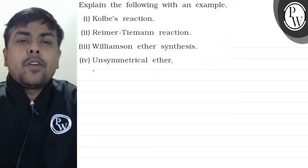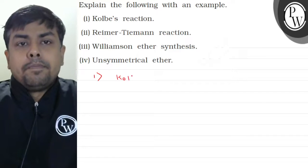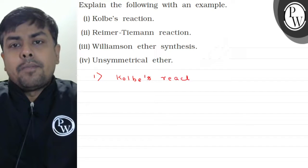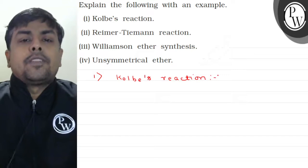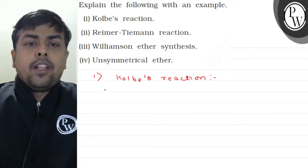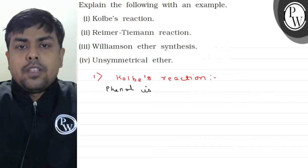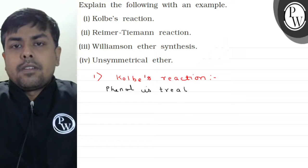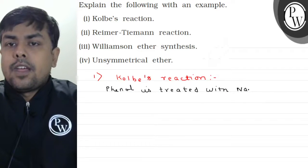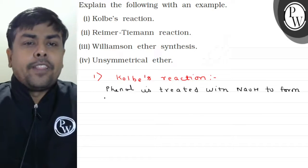First, let's talk about Kolbe's reaction. A very important reaction. In this reaction, phenol is treated with NaOH to form sodium phenoxide.